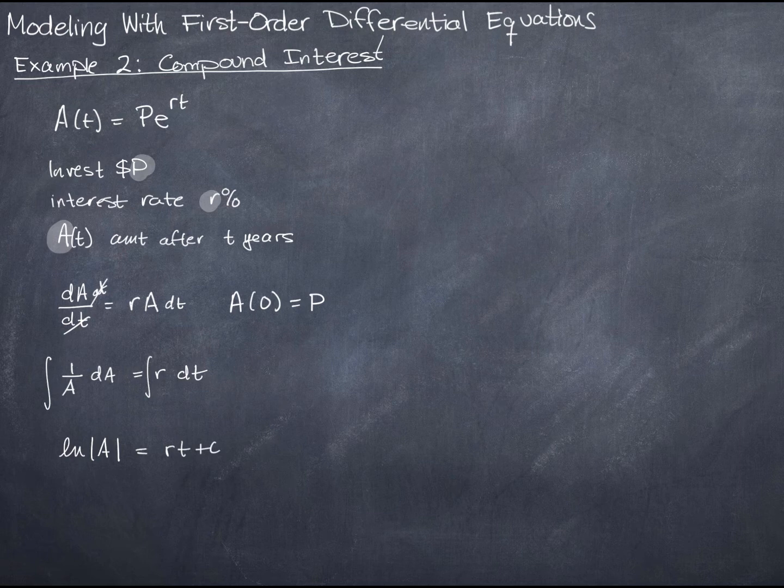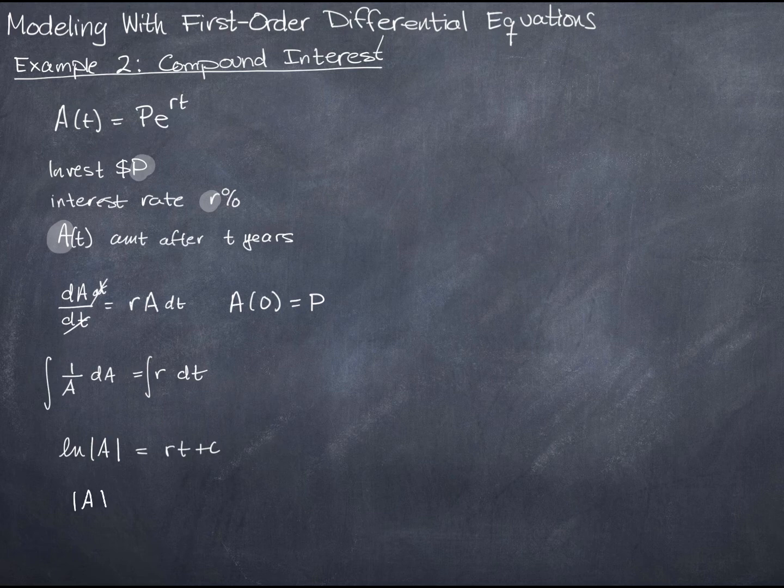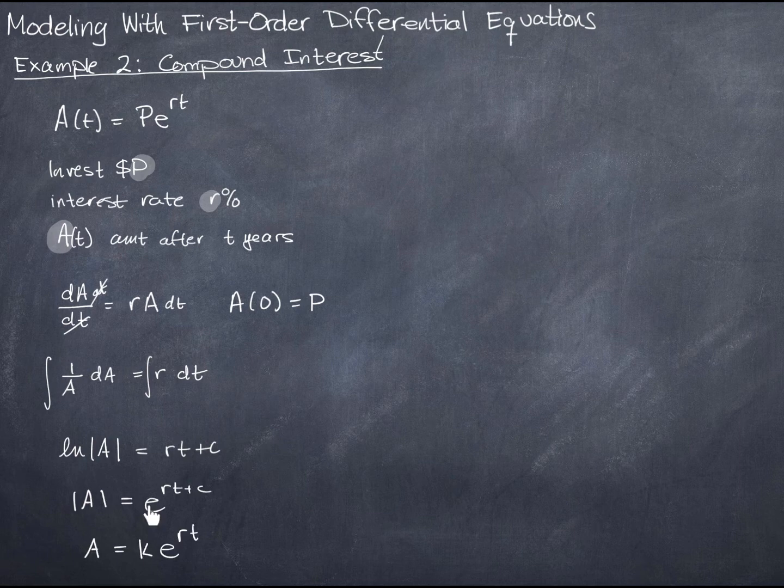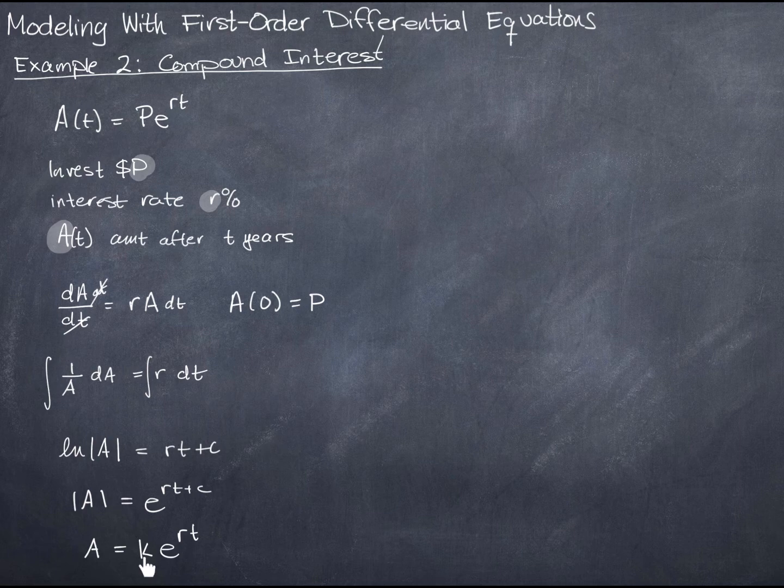Now I'll exponentiate both sides, and I get A equals e to the rt plus c. So A equals k times e to the rt. k comes from, this can be written as e to the rt times e to the c, and e to the c is a constant. So I've called it k.